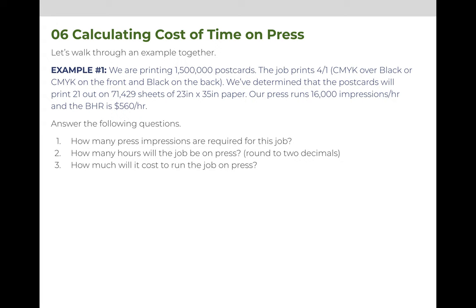Let's go through an example together. In this example, we are going to print 1,500,000 postcards. The job prints 4/1, meaning CMYK — cyan, magenta, yellow, and black — on the front of the sheet, and black on the back. When you see that fraction, the numerator represents the front of the sheet and the denominator represents the back, and it does not matter how many colors print on the front or how many print on the back. All you're asking yourself is: does it print on the front, and does it print on the back? In this case, it prints on the front and the back of the sheet.